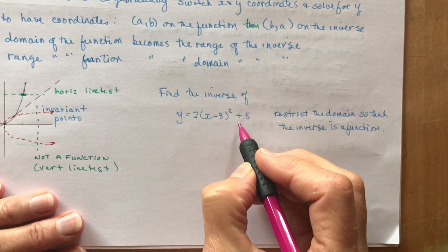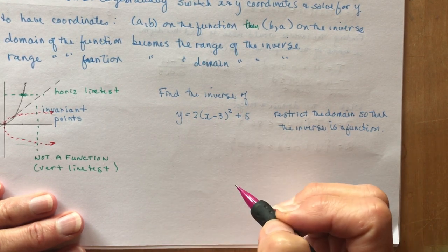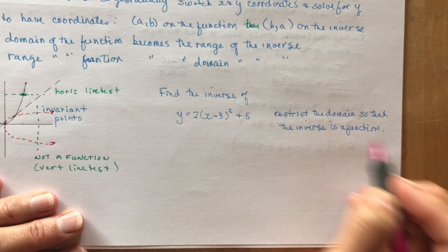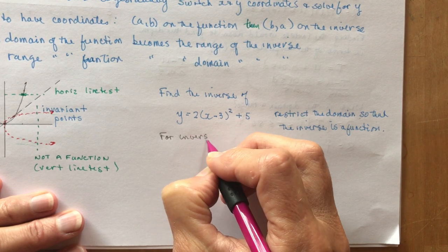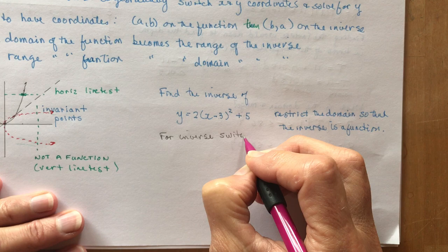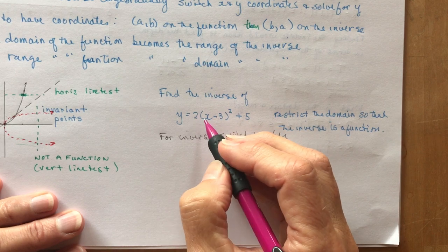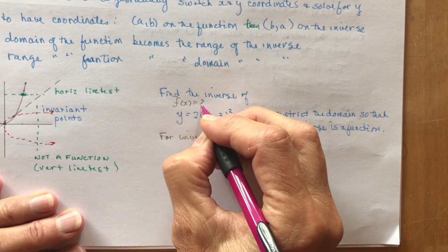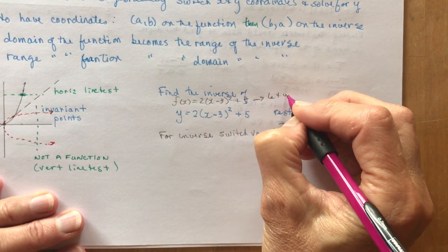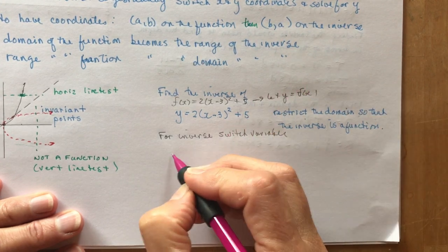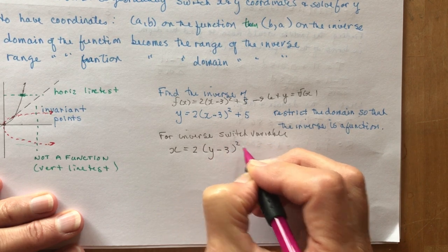Let's take a look at a little question you would have done back in grade 11 as well. Find the inverse of this quadratic function. You know it's a parabola with a vertex of (3, 5) and a vertical stretch by a factor of 2. Restrict the domain so that the inverse is a function. For inverse, switch variables. Now, if you started off a question and said f(x) equals this, then you should say let y = f(x). You don't want to leave f(x) in there. You would say let y = f(x) and then switch the variables. So I have x = 2(y - 3)² + 5.